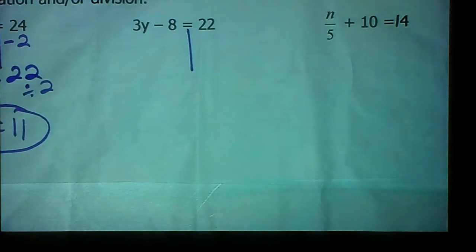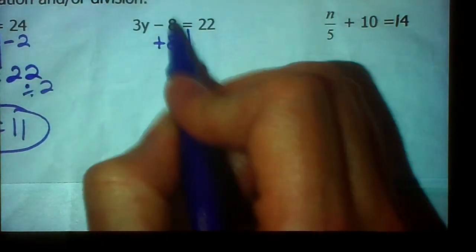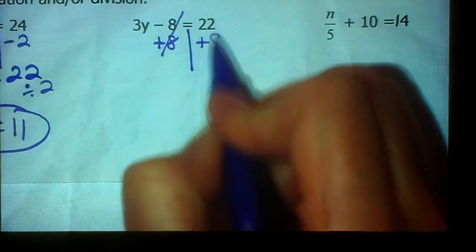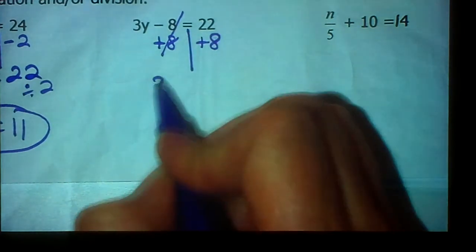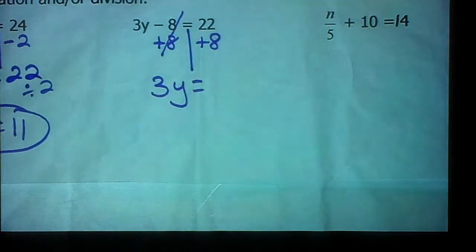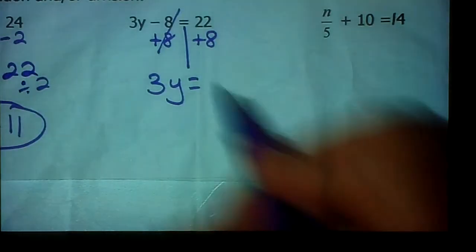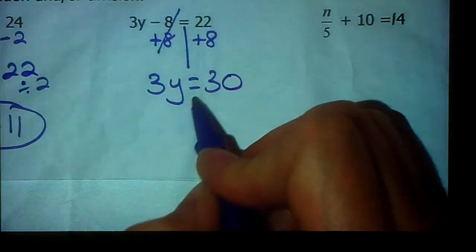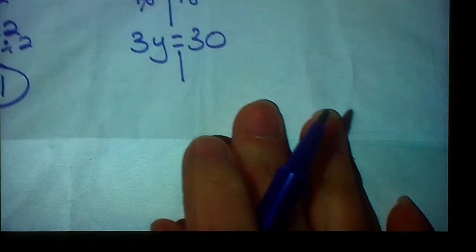All right, look at our next one. I want to get rid of subtracting 8 first. So I'm going to add 8. And that goes away. And I'm going to add 8 over here. So I'm left with 3 times y equals 22 plus 8 is 30. Not done yet. Something times 3 makes 30. I know you can do this in your head.